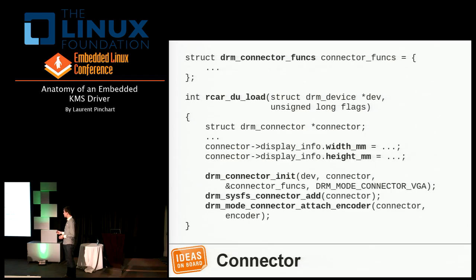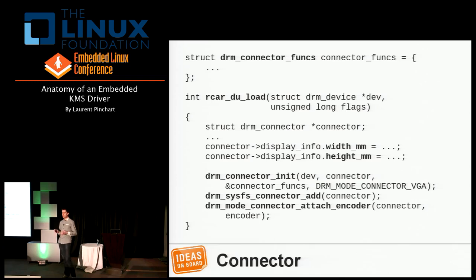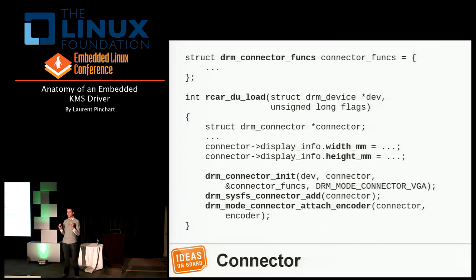For connectors, you have a connector init function and connector functions to provide. Every connector needs to be attached to one or several encoders — otherwise it's useless. When you have simple hardware with one-to-one mapping between encoders and connectors, you can attach them at initialization time. If a connector can be attached to different encoders (not simultaneously), you need to manage that at runtime.